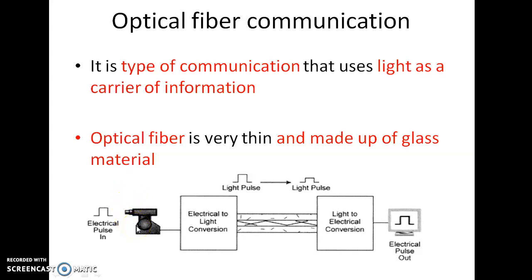Sound is a longitudinal wave. Longitudinal waves means those waves consist of compression and rarefaction in the air medium. So those longitudinal waves are converted into the electrical equivalent signal, and that electrical equivalent signal is given to the electrical-to-light conversion block. Whatever electrical input signal we have, we convert it into light pulses.